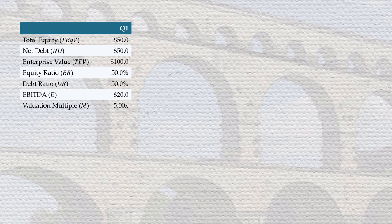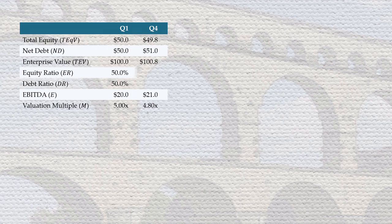A few quarters go by and these numbers change a bit. TTM EBITDA goes up to 21, but the market comps are down, so the valuation multiple is 4.8. Also, the company burns through a bit of cash, so net debt is now 51. This gives us an enterprise valuation of 100.8, a total equity value of 49.8, and slight changes in the equity and debt ratios.